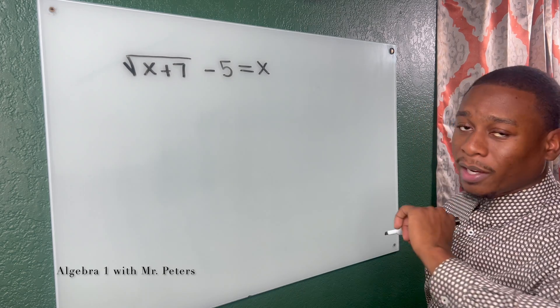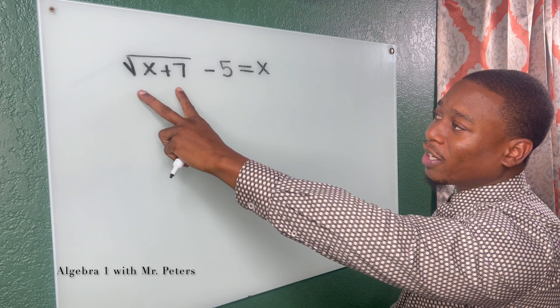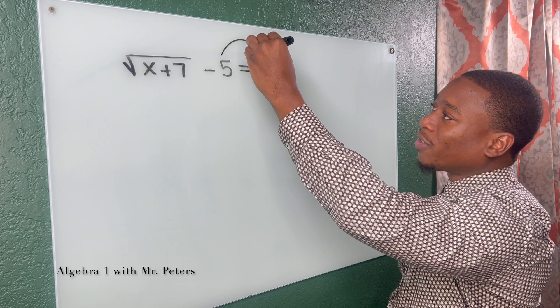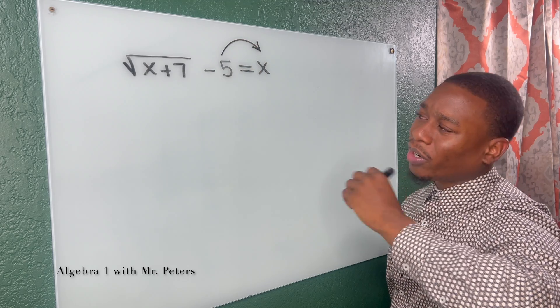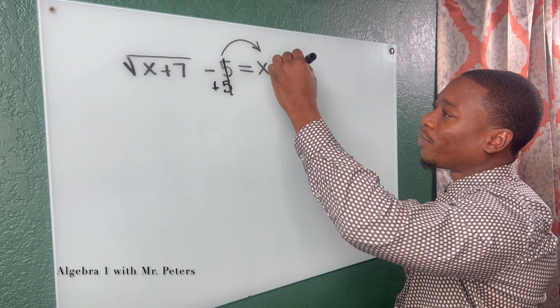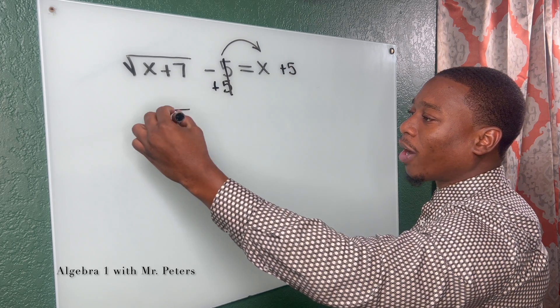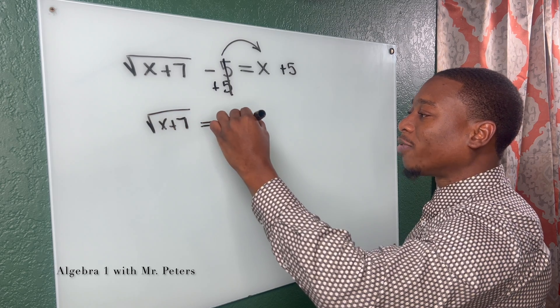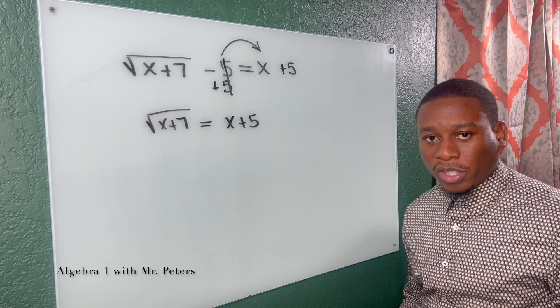So when we're looking at a radical equation like this, to solve for X, we have to get the radical by itself. So that means I have to add this five to the other side or get rid of it on the left side. So what I do on one side, I do to the other. So now we have radical X plus seven is equal to X plus five.